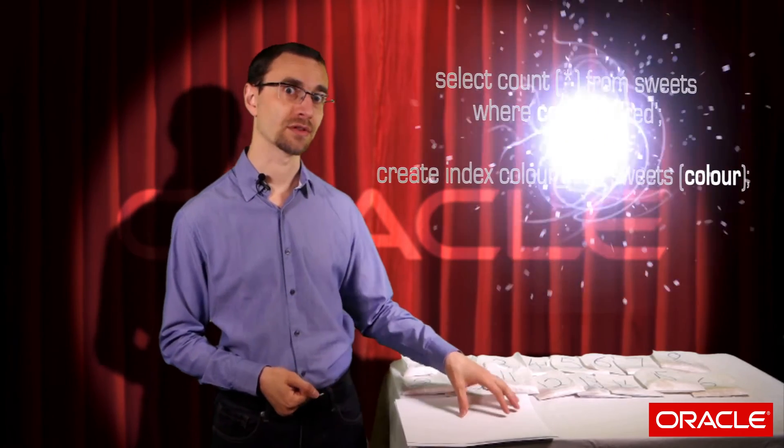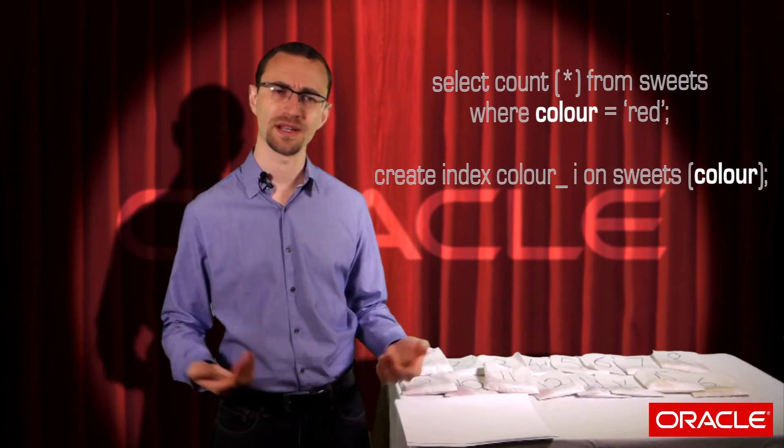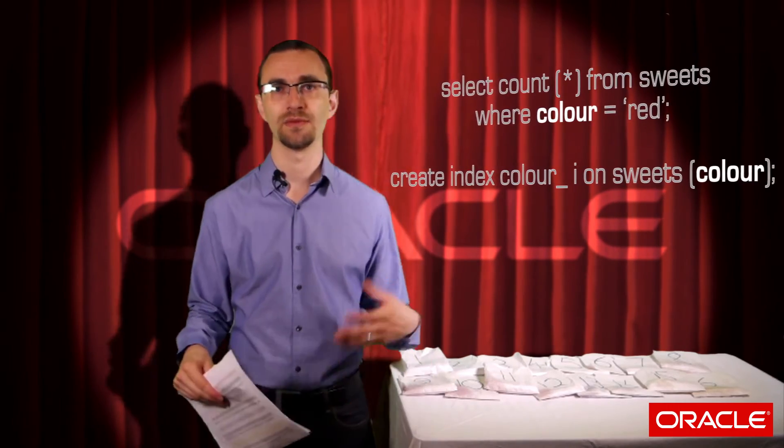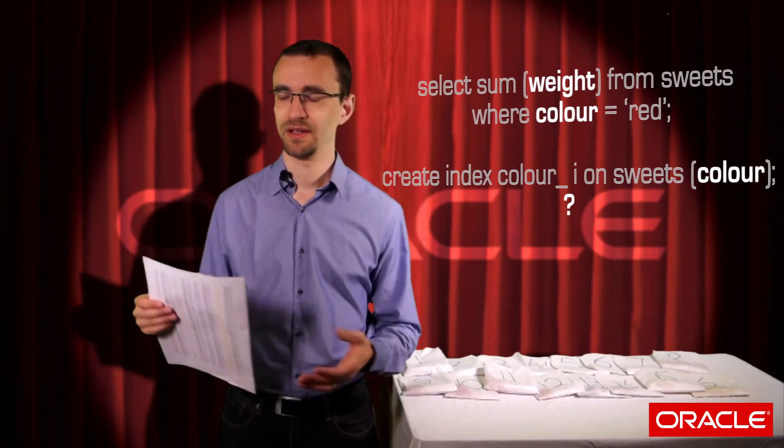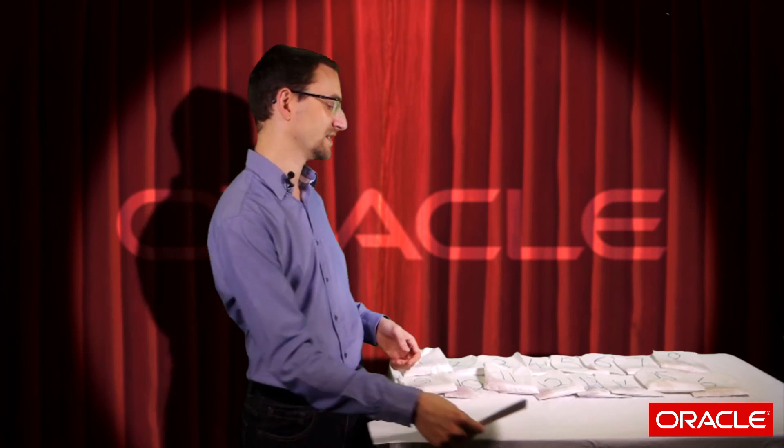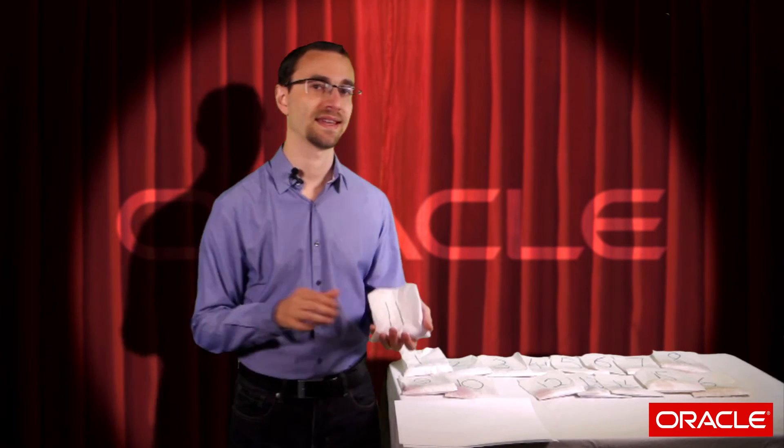To enable an index-only scan, all the columns listed in your query must also be stored in a corresponding index. For example, in this situation here, let's say we don't want to find just how many sweets are red, but we want to find the total weight of the red candy - then our document here isn't good enough. We can use this to find how many are red, but we still have to go to the table to get the candies to find how heavy they are.